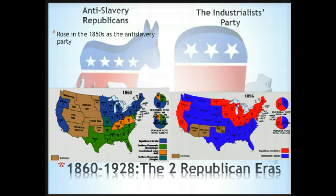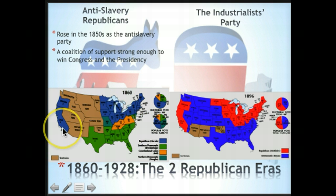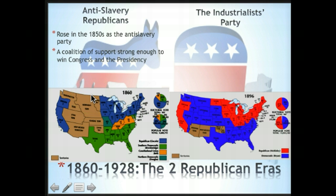The first Republican era is the anti-slavery Republicans, and they rose in the 1850s as the anti-slavery party. They received a coalition of support strong enough to win Congress and the presidency, and of course their first Republican president was Abraham Lincoln. They got most of their support from up north and in western states — from people who were anti-slavery supporters.